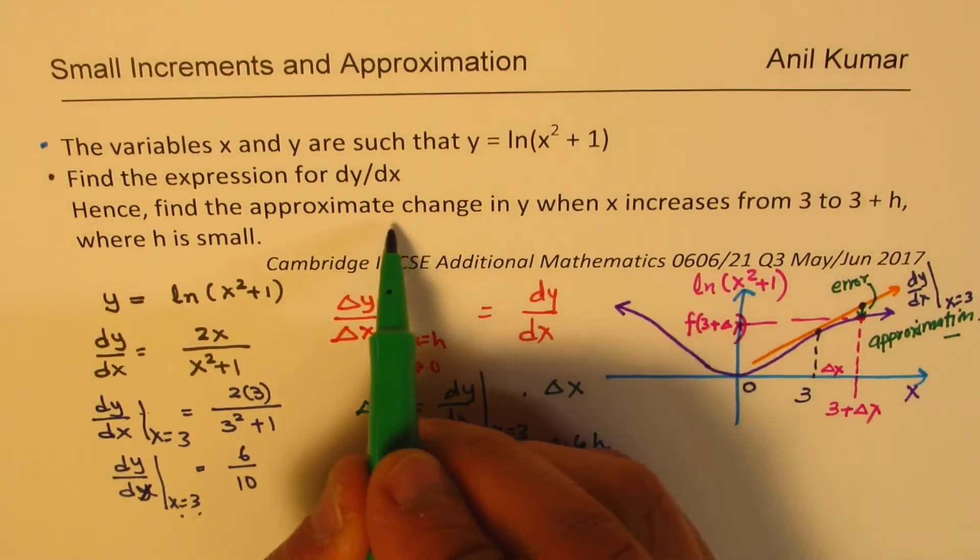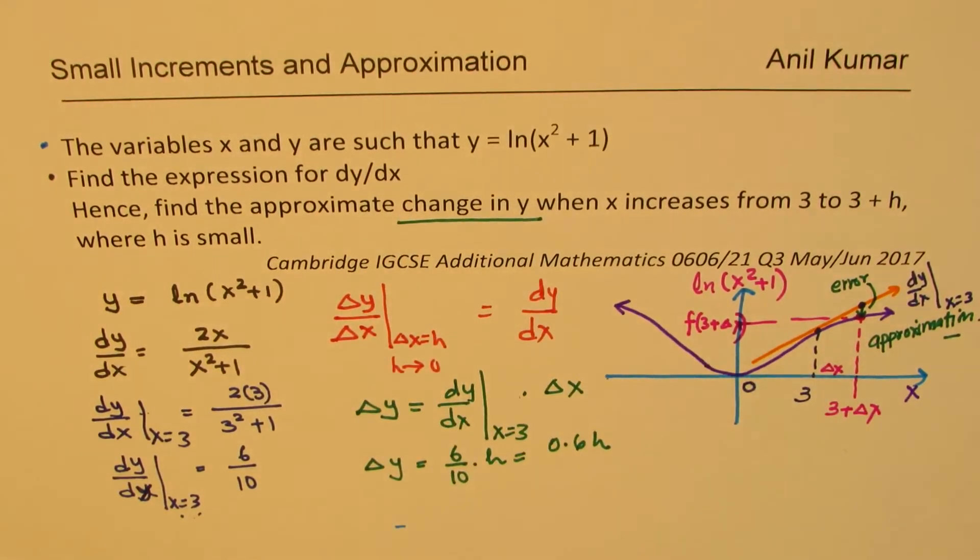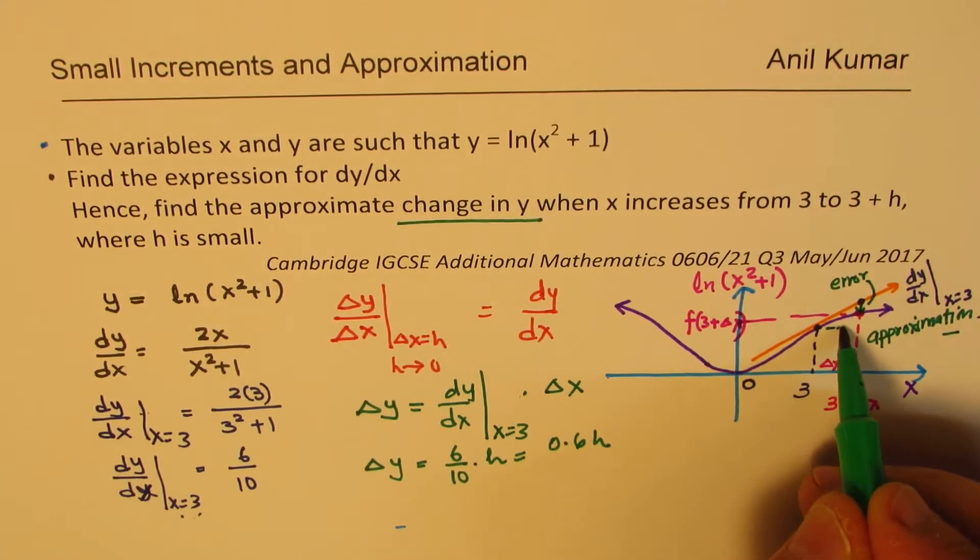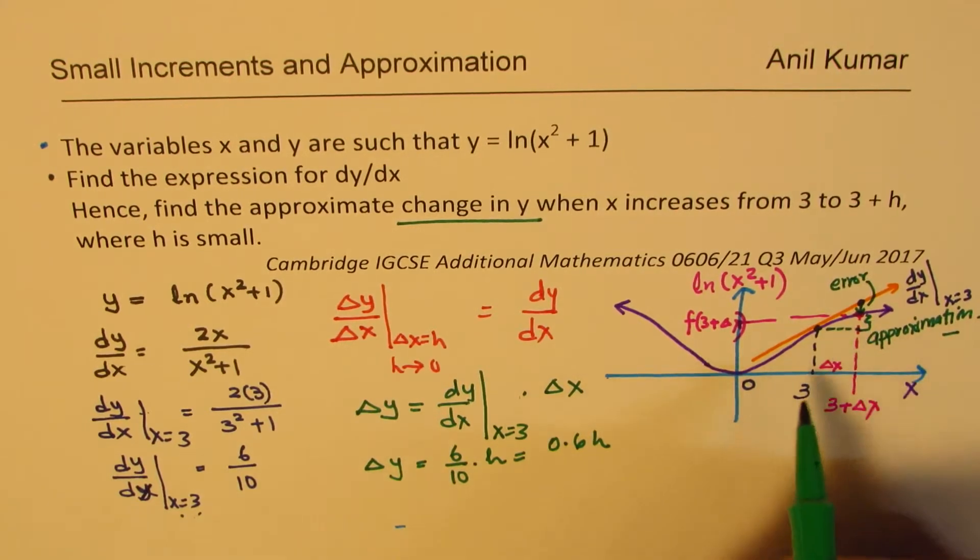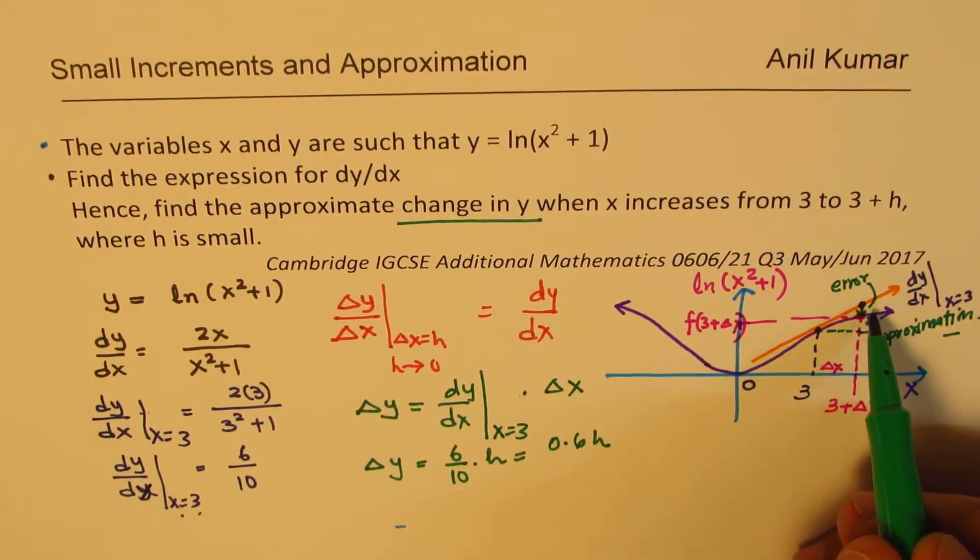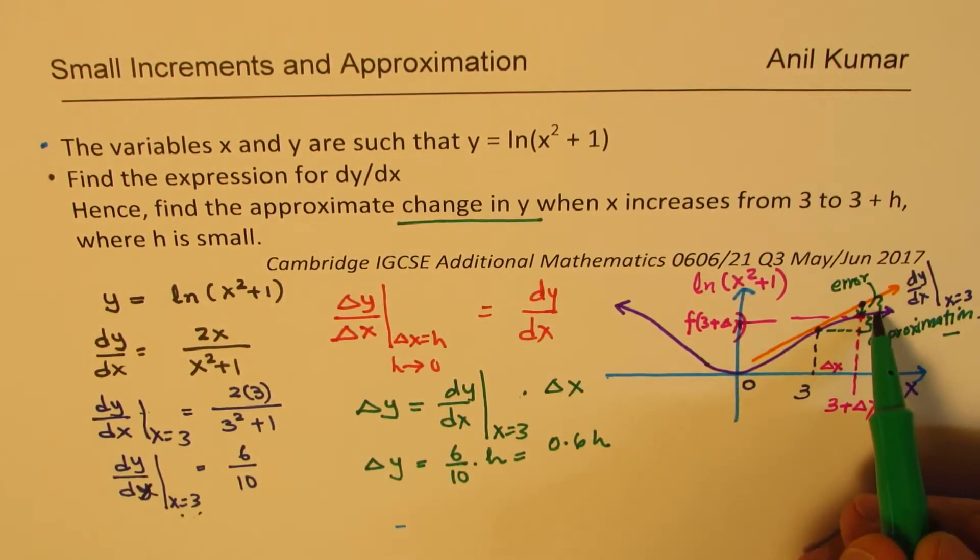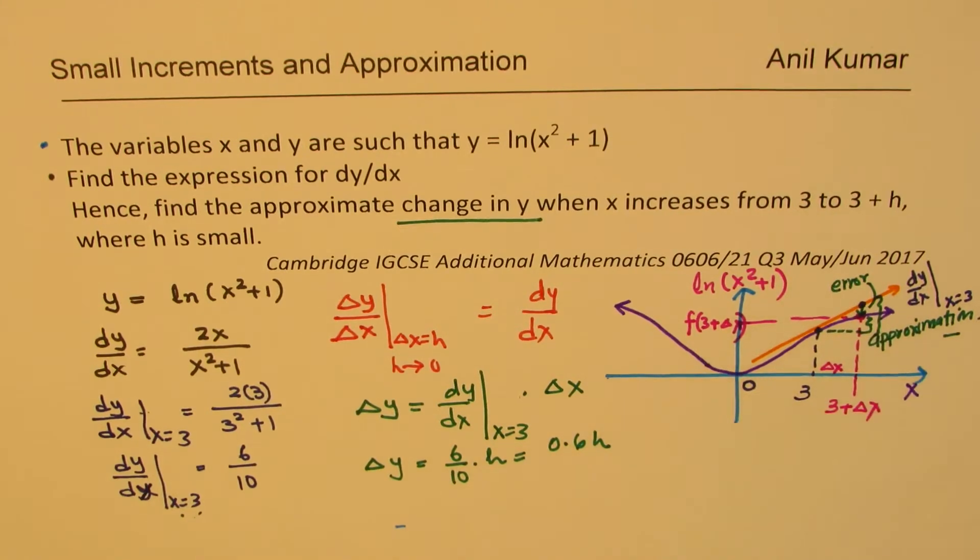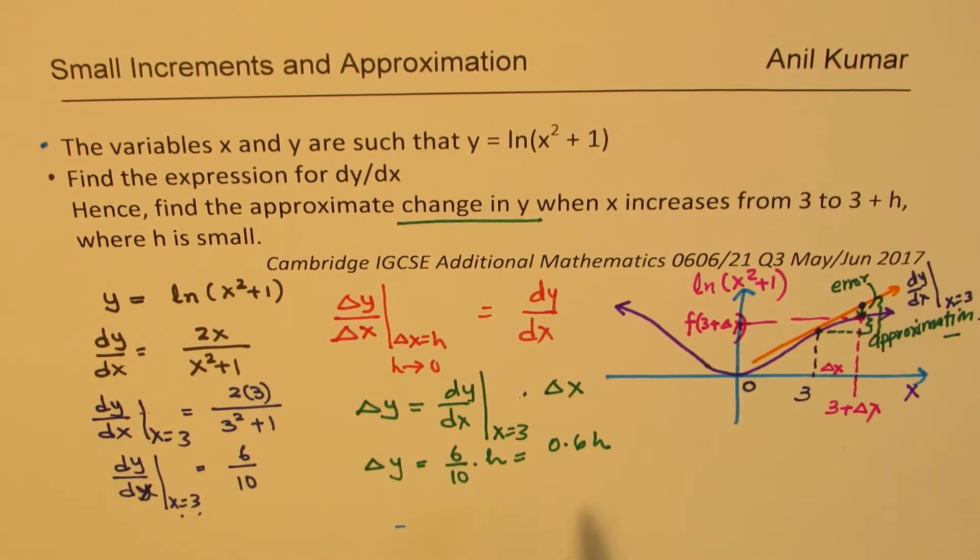We get this delta y as we have already calculated this value, 6 over 10, and delta x is h for us. So we get 0.6h as the change in y. It asks for the approximate change in y, not the final value but just the change in y.